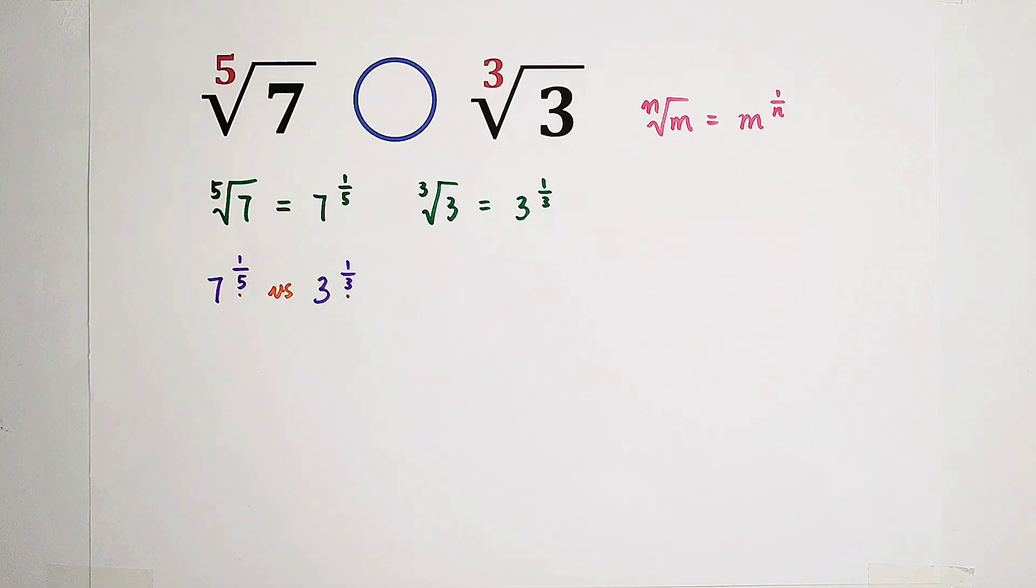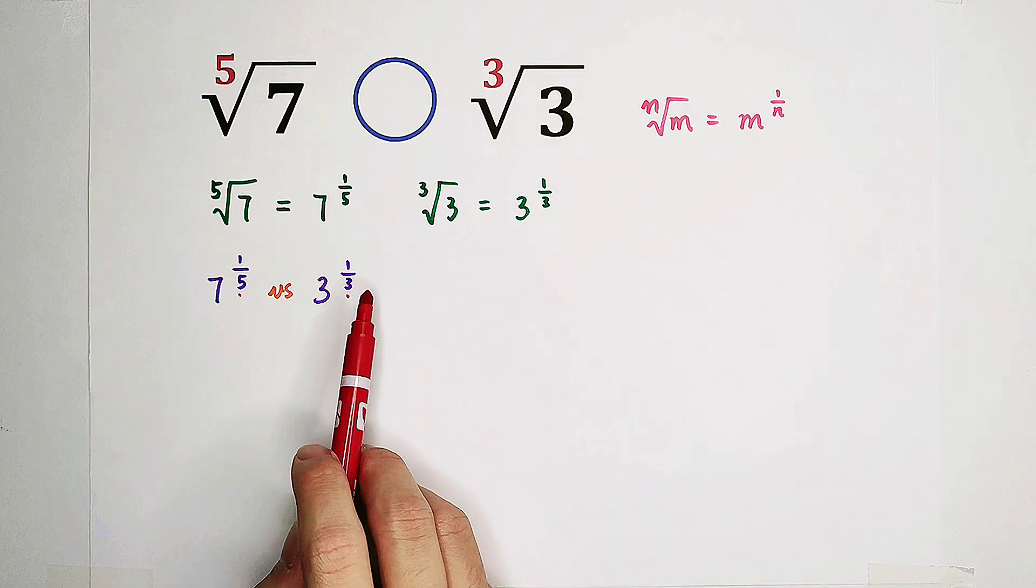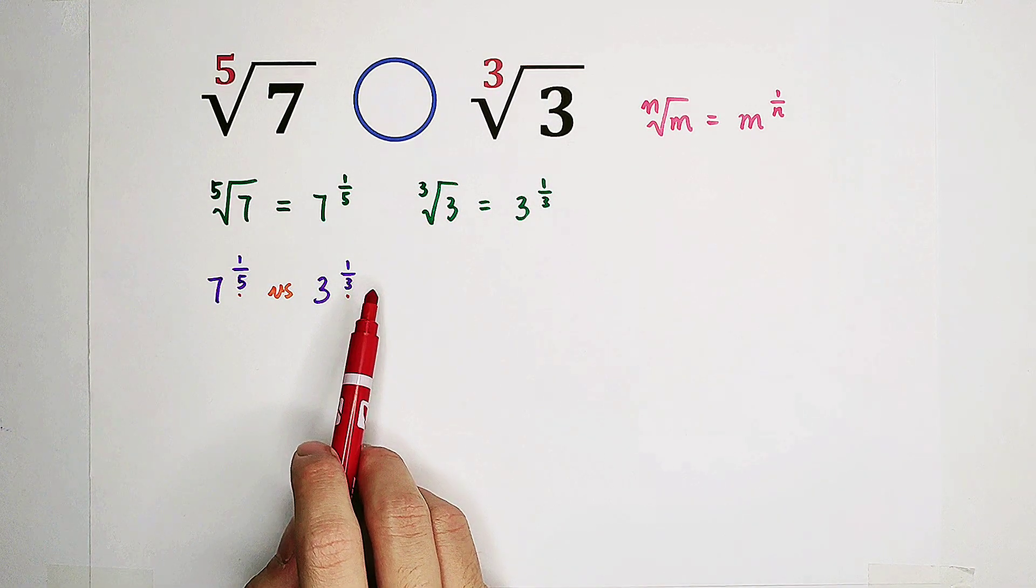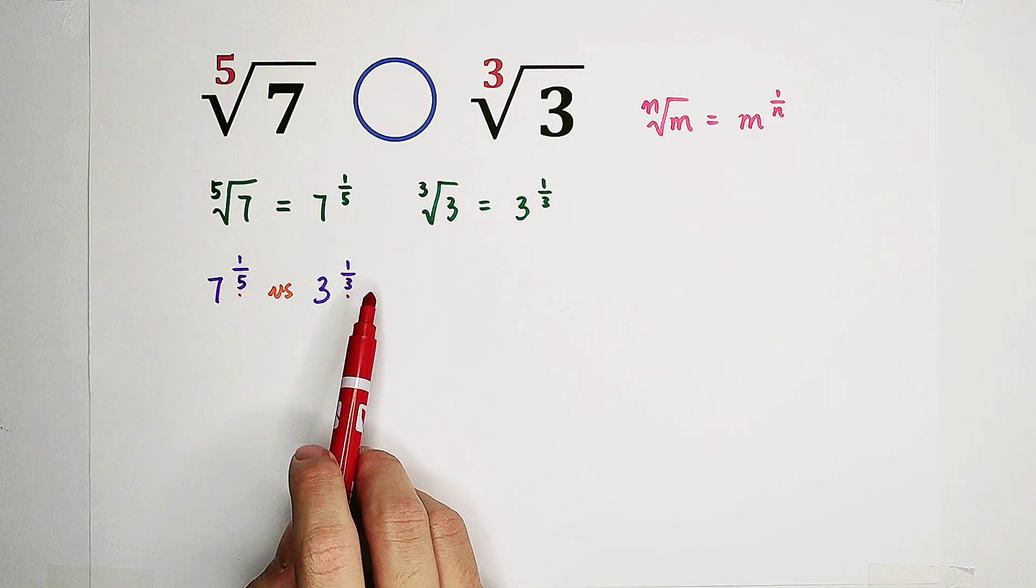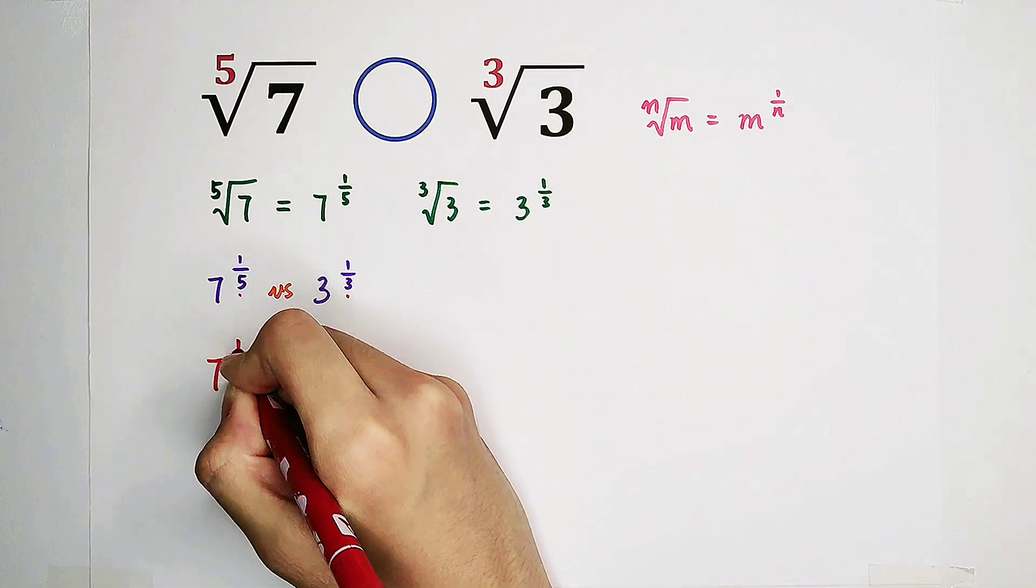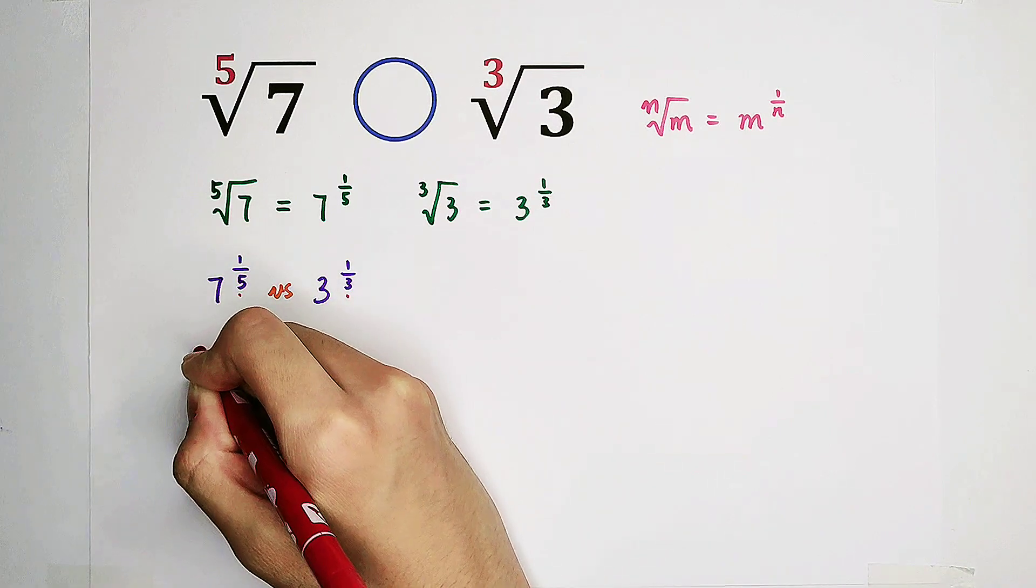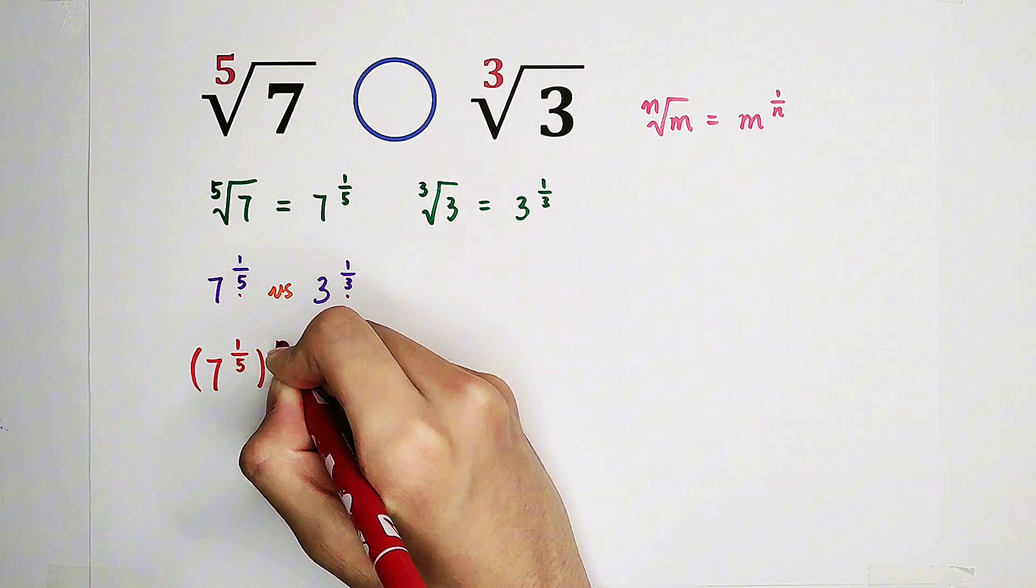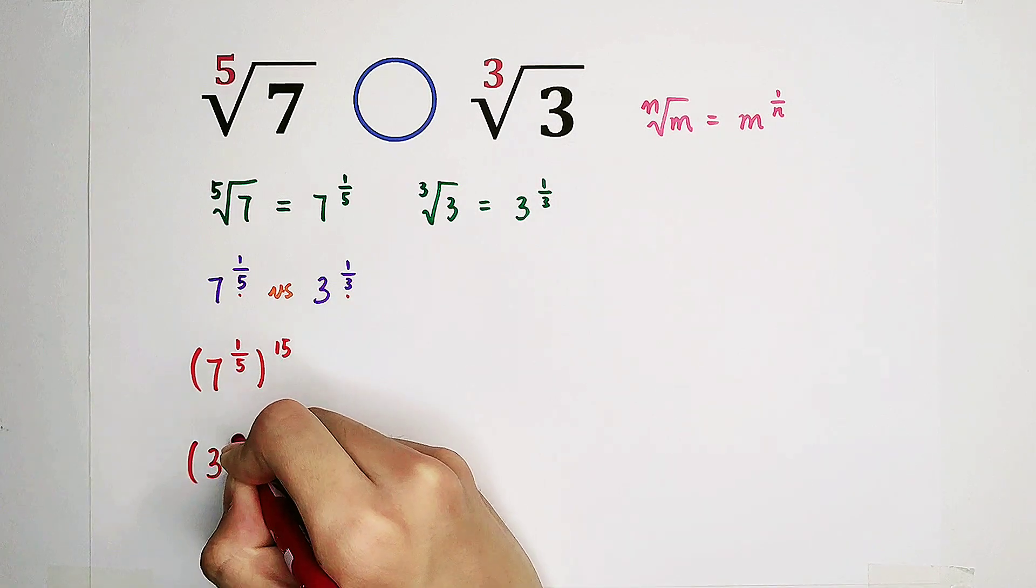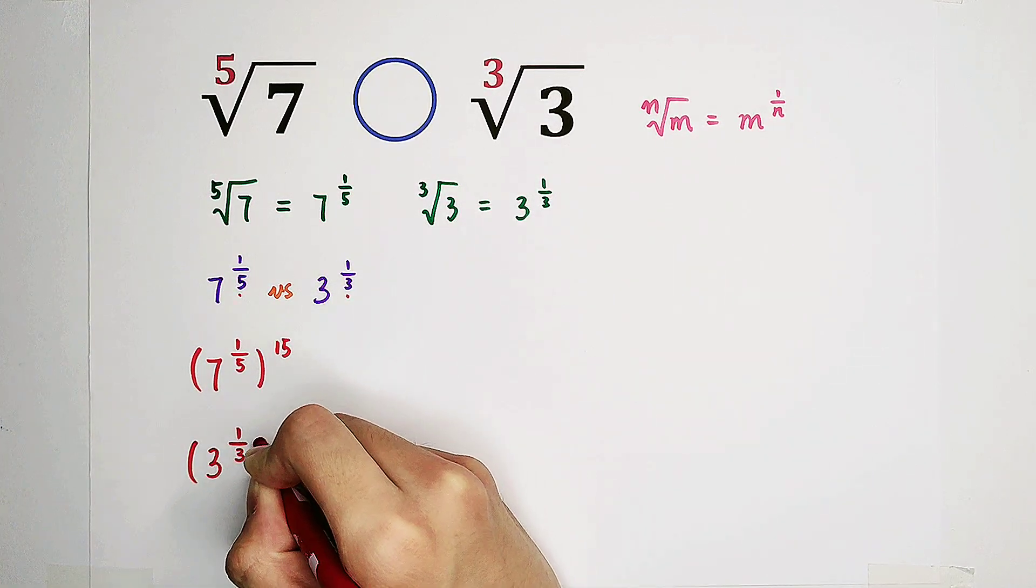So what shall we do? Now, a trick. To the power of 1 fifth. To the power of 1 third. Of course, we can take a 15th power on both sides. So, we can take a 15th power here and a 15th power here.